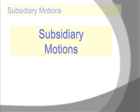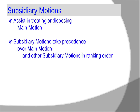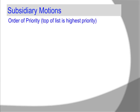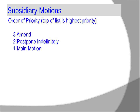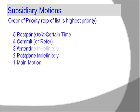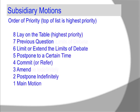What are subsidiary motions? Subsidiary motions assist in handling a main motion. They take precedence over main motions and other subsidiary motions in ranking order. Only one main motion is on the floor at a time; however, multiple subsidiary motions are often okay. The order of priority is: main motion, postpone indefinitely, amend, commit or refer. If there is a motion to commit or refer, there cannot be an amendment until that motion has been resolved. Then: postpone to a certain time, limit or expand the limits of debate, previous question, and lay on the table. All of them require a second.